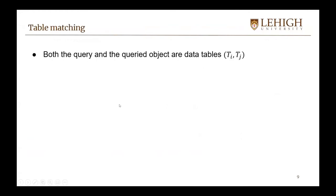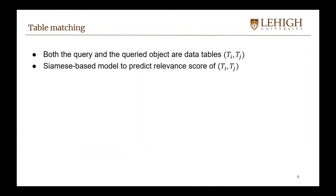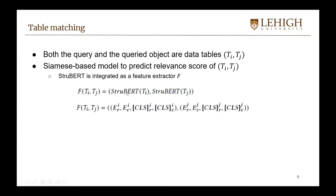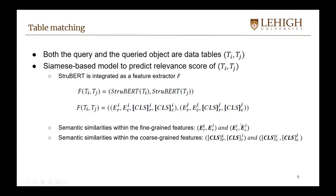For table matching, both the query and the queried object are data tables. To predict the relevance score from a table pair, we propose a Siamese-based model using Strubert as a feature extractor. We extract features from each table, then capture semantic similarities within the fine-grained features — both row embeddings and column embeddings of two tables — and within the coarse-grained features, including the row-guided CLS and column-guided CLS embeddings from both tables.